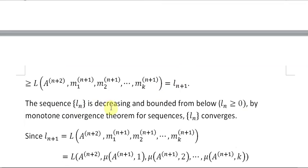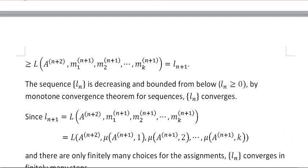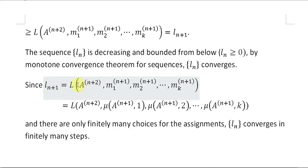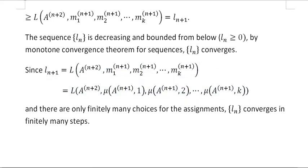The sequence L_n is decreasing and bounded from below because it is always non-negative. By the monotone convergence theorem for sequences — a well-known result in real analysis — L_n is convergent. Furthermore, L_{n+1} depends only on the assignments, since the m values are defined using the assignments. There are only finitely many choices for the assignment, so the sequence L_n cannot take infinitely many distinct values. Therefore, it must converge in finitely many steps.